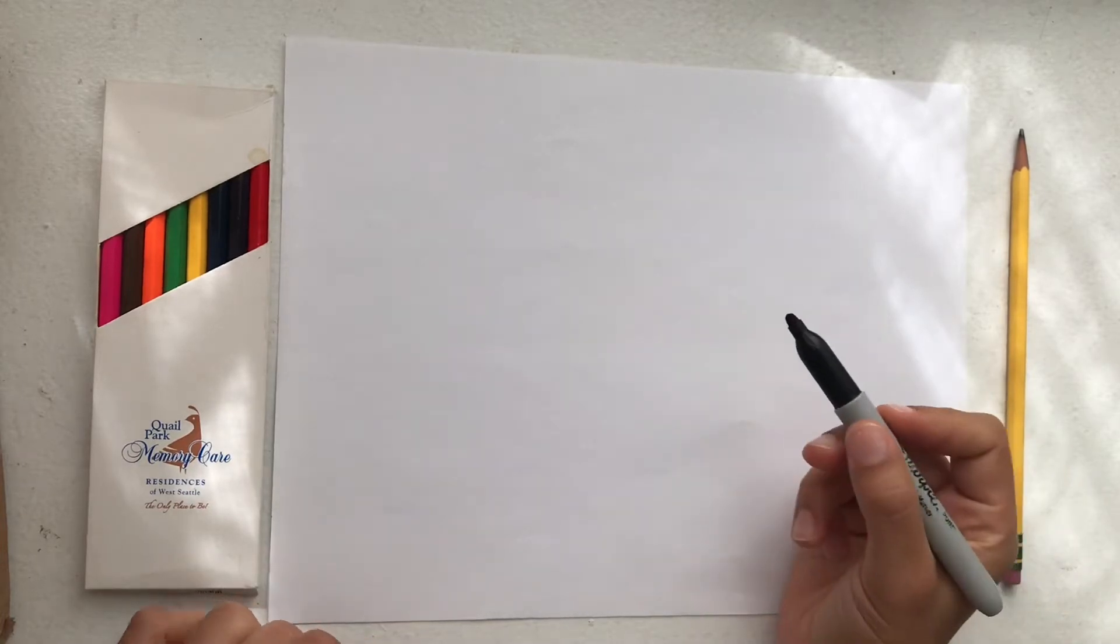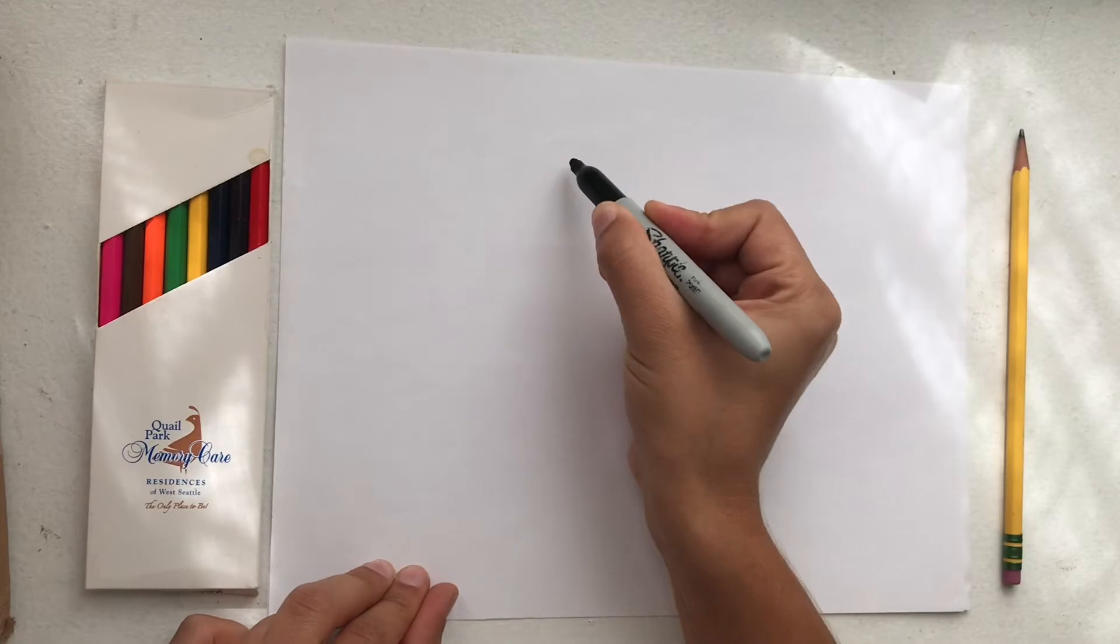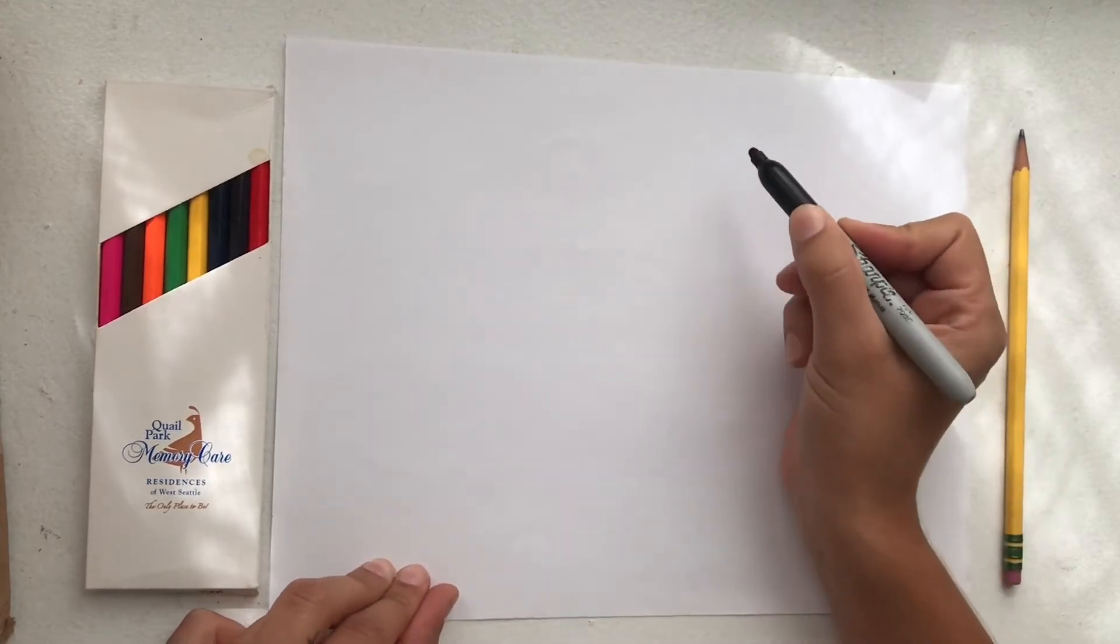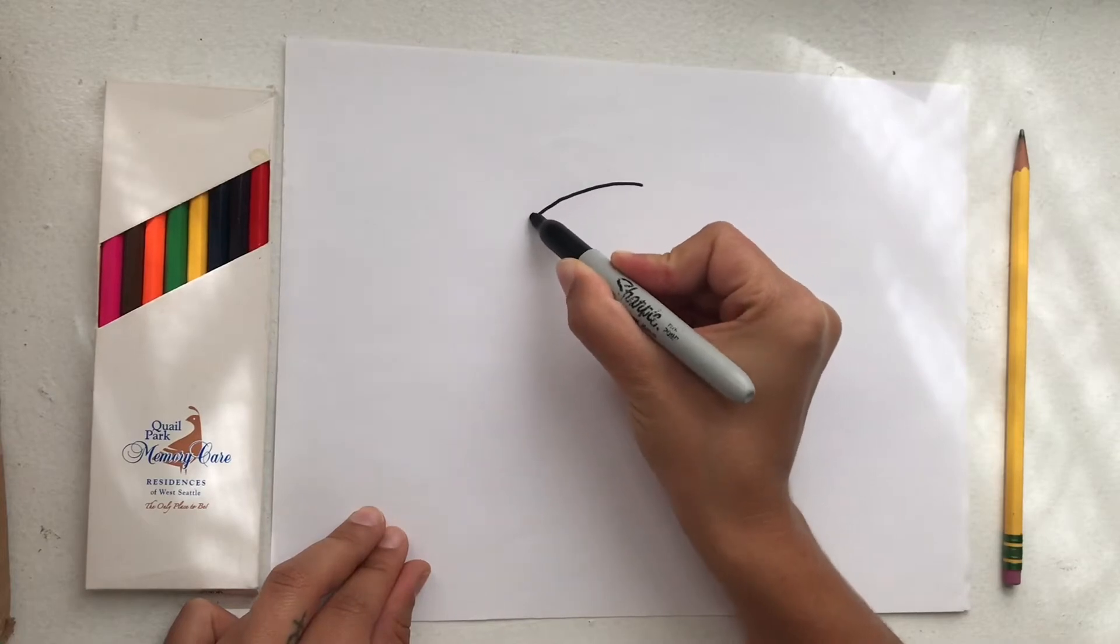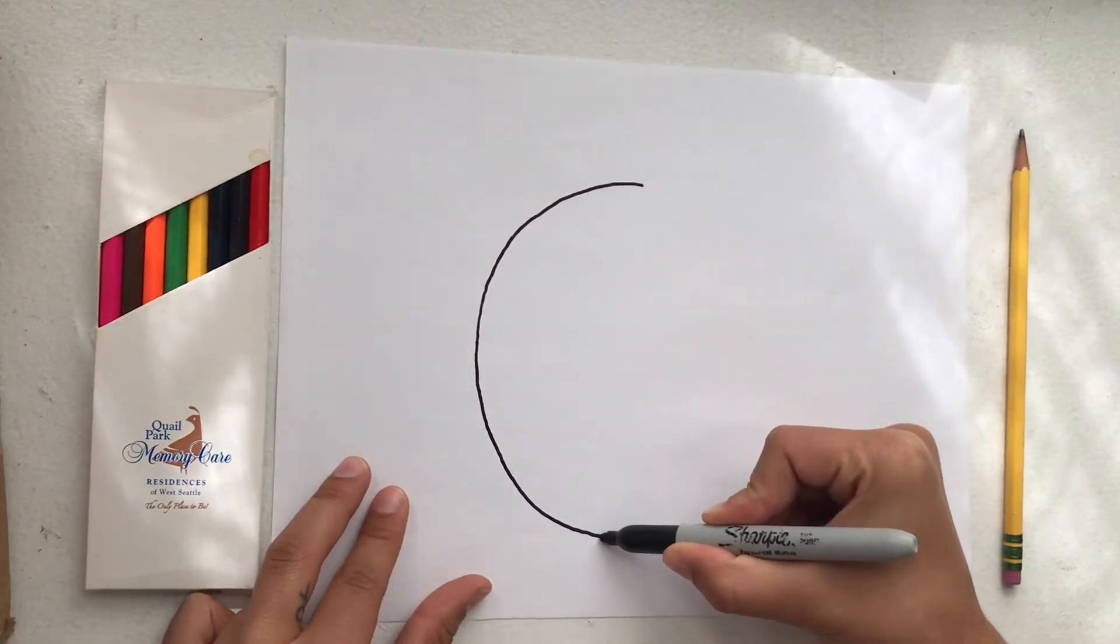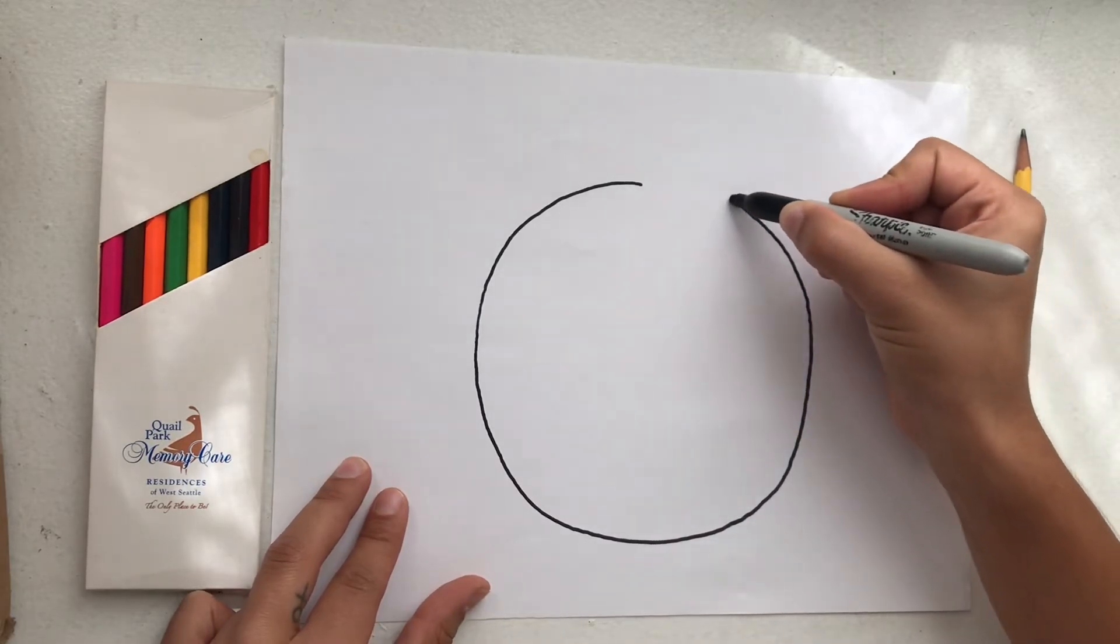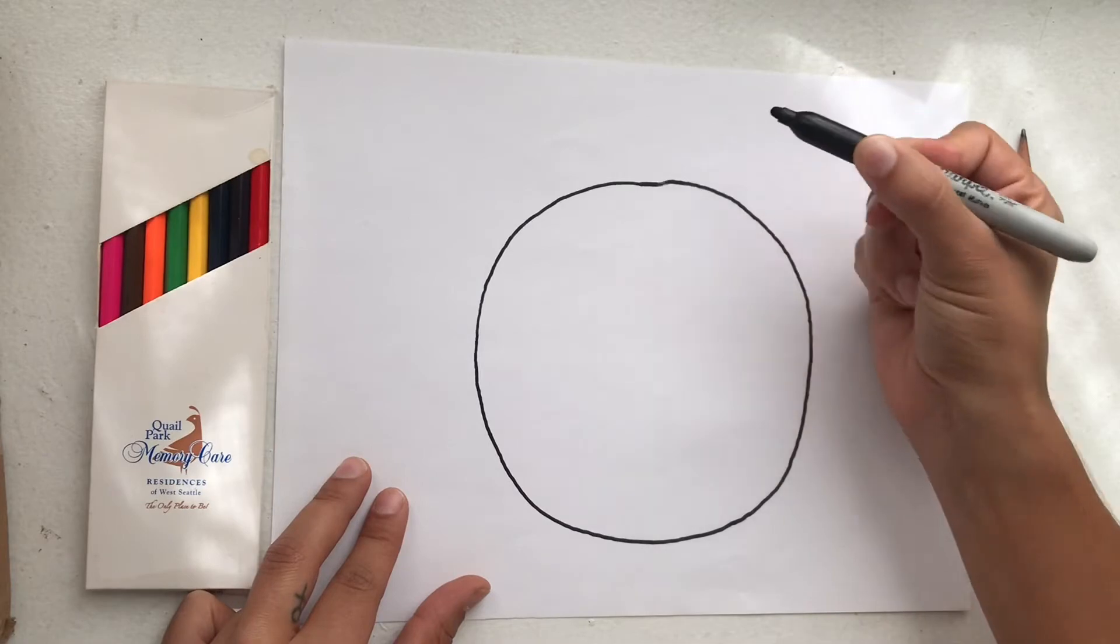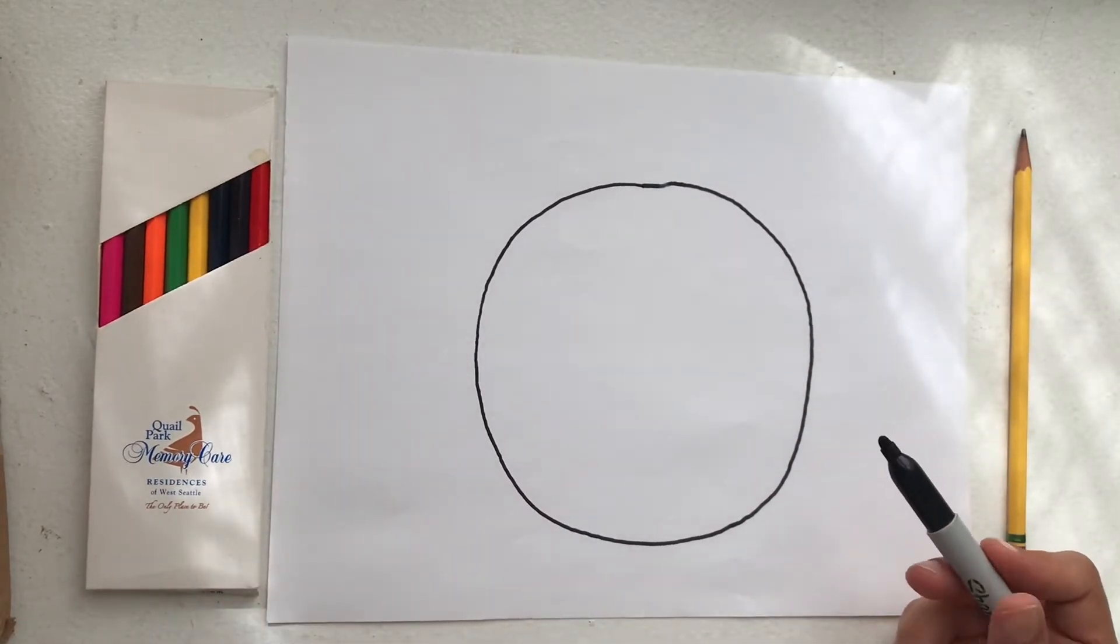The first step is you are going to create a circle right in the middle of our paper. Remember to go slowly and take your time so you can try your best to make the best circle you can. It is okay if your circle is not perfect. Nothing ever needs to be perfect in art. All we need to do is try our best.